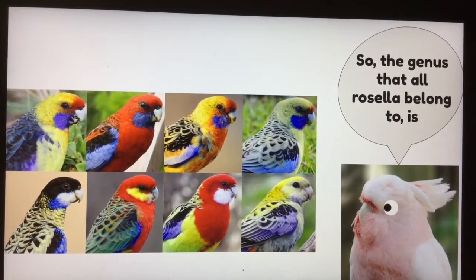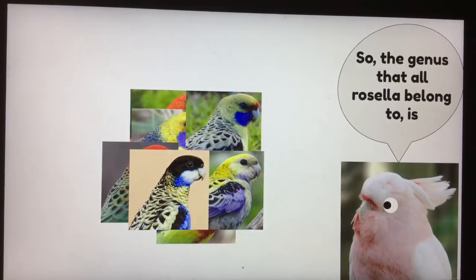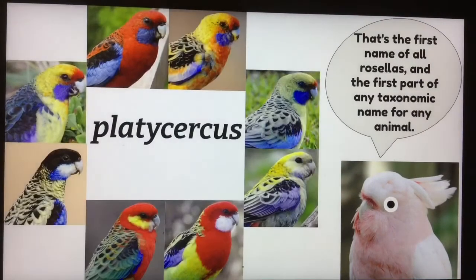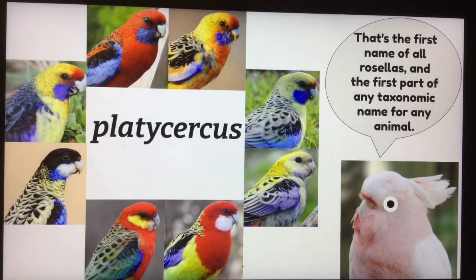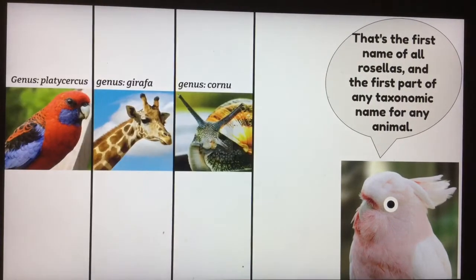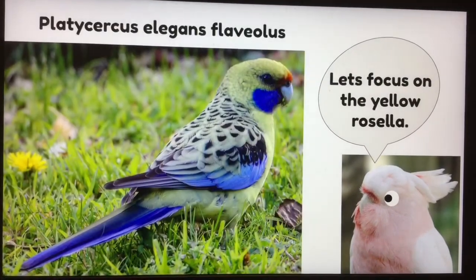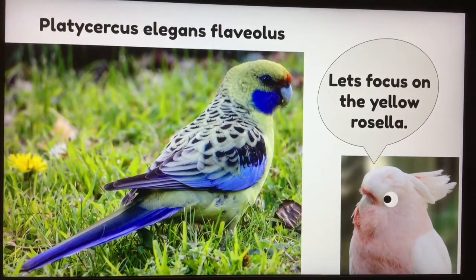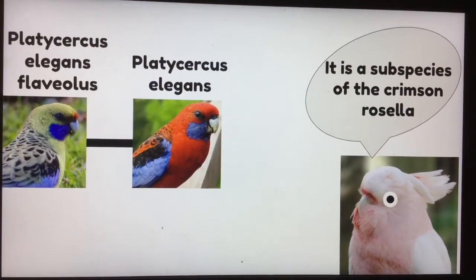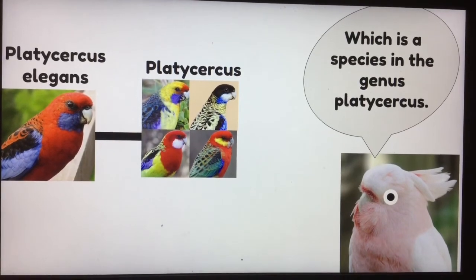The genus that all rosellas belong to is Platycercus — that's the first name of all rosellas and the first part of any taxonomic name for any animal. Let's focus on the yellow rosella, the subspecies of the crimson rosella, which is a species in the genus Platycercus.